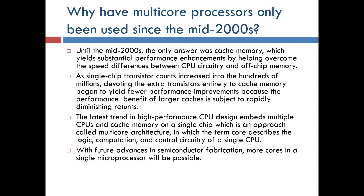Why have multiple core processors only been used since the mid-2000s? Until the mid-2000s, the only answer was cache memory, which yields substantial performance enhancements by helping overcome the speed differences between CPU circuitry and off-chip memory. As single-chip transistor counts increased into the hundreds of millions, devoting extra transistors entirely to cache memory began to yield fewer performance improvements because the performance benefit of larger caches is subject to rapidly diminishing returns. This led to the multi-core architecture approach, in which the term core describes the logic, computation, and control circuitry of a single CPU. With future advances in semiconductor fabrication, more cores in a single microprocessor will be possible.